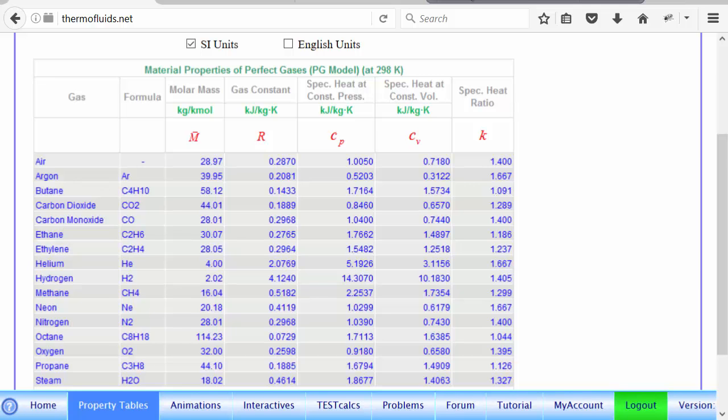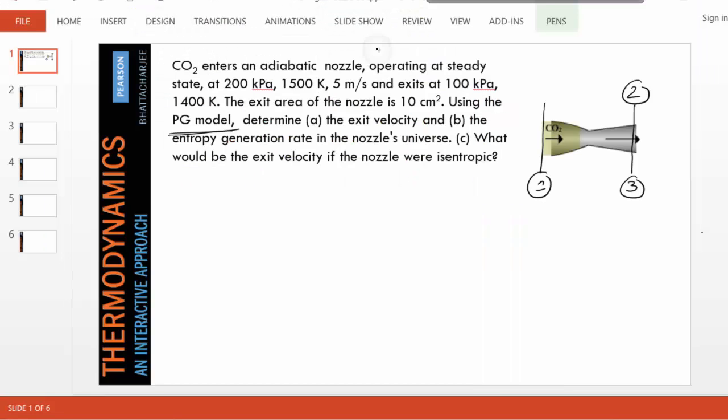And for CO2, carbon dioxide. Yes, here it is. Let's pick up the R we might need and Cp we might need. And maybe we might need K also, which is approximately 1.29. So let's write these values down. And R we show an R value of 0.189. Okay, so now let's get started.